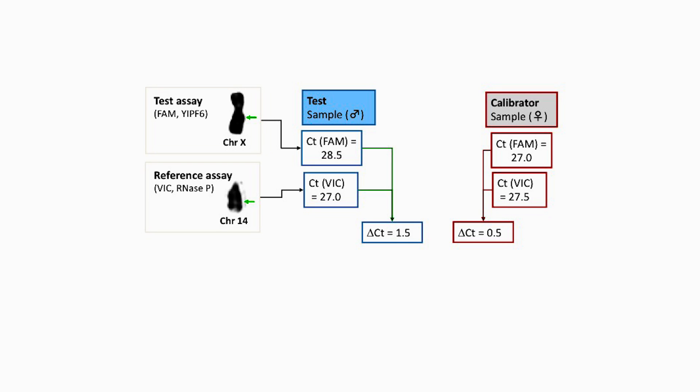We then subtract the DCT of the calibrator from the DCT of the unknown. Next, we convert the value to a relative quantity, and then multiply the relative quantity, or RQ, by the copy number of the calibrator, which in this case is 2 with RNase P. A copy number of 1! Wasn't that easy — and no messy standard curves to deal with.